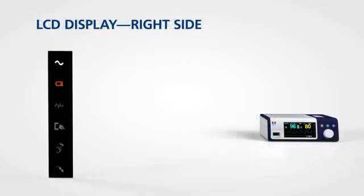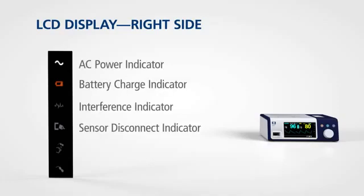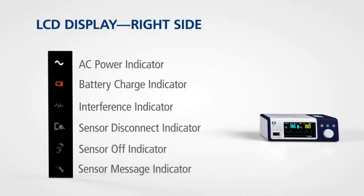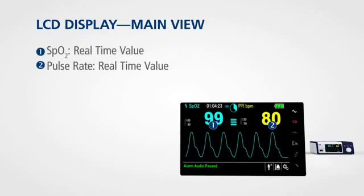On the right side of the display, icons provide information on the status of the monitor. These include indicators for power, battery charge, interference, sensor disconnect, sensor off, and sensor messages. The main view of the LCD presents the real-time values for SPO2 and pulse rate in prominent numbers that can be read at a glance.